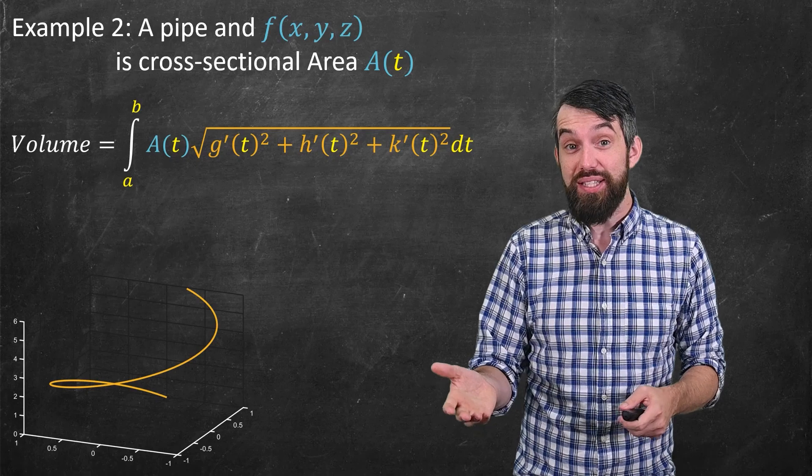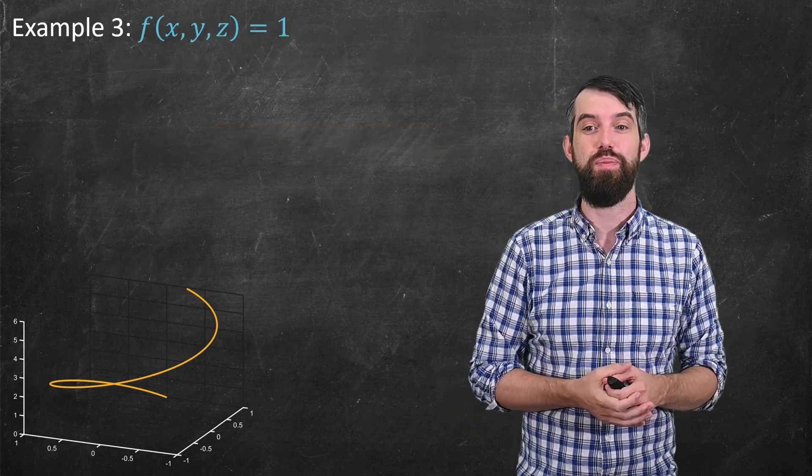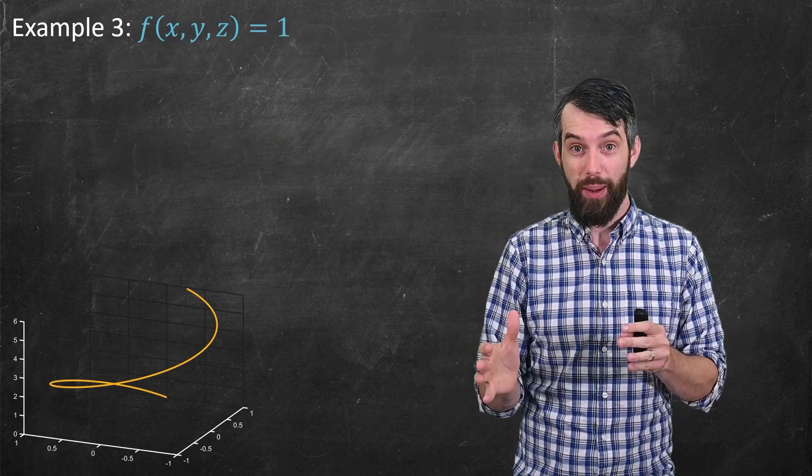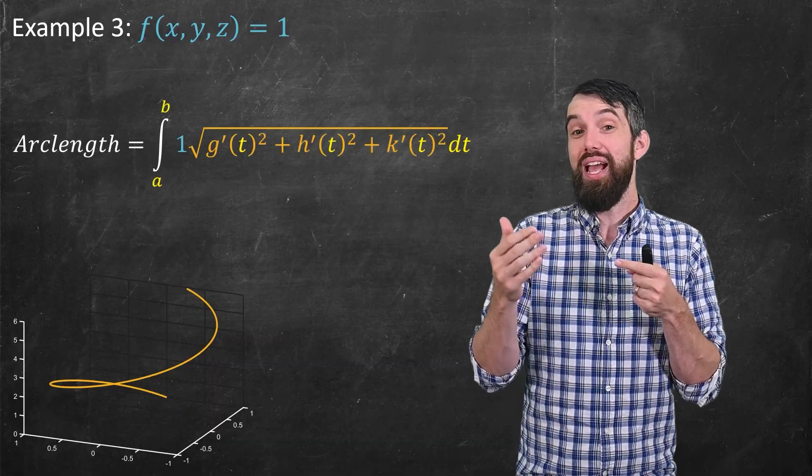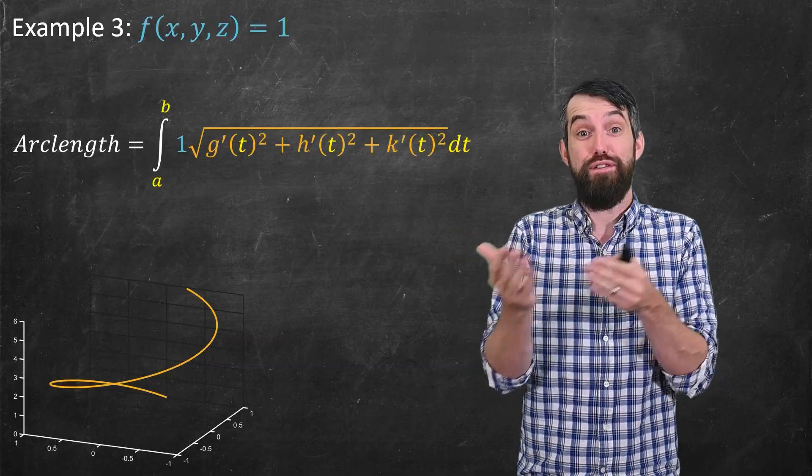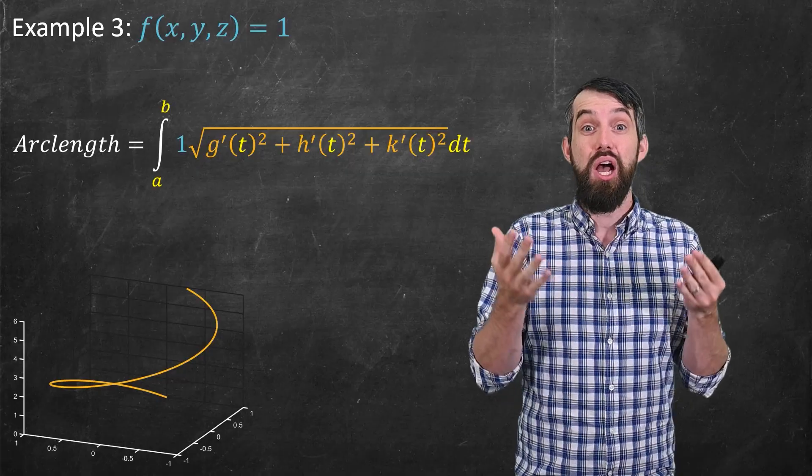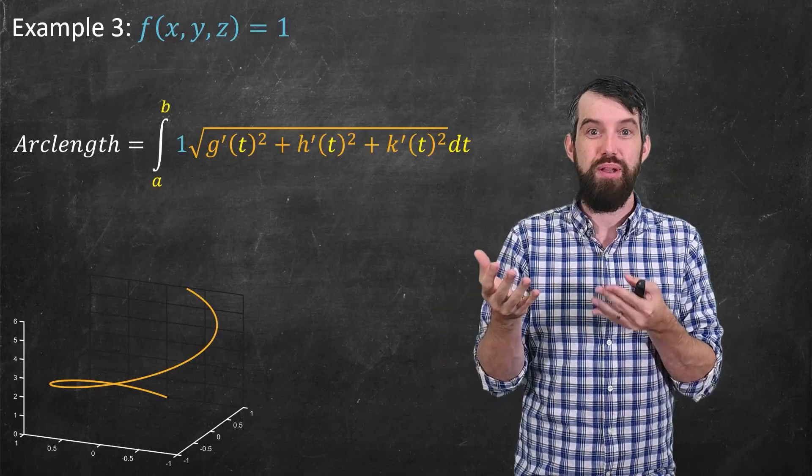Okay, I'll give a third example here. This time my function is very simple. My function is just the function 1. And then if I plug this in, you get a formula that might be familiar from multivariable calculus. This was our arc length formula that you computed before.